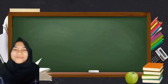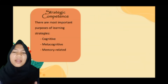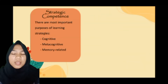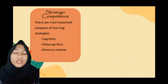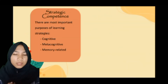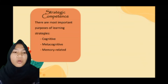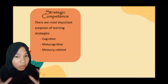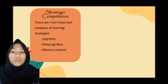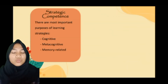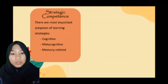Thank you, Alifah. Okay, guys, we have strategic competence. There are most important purposes of learning strategies. The first is cognitive — strategies making use of logic and analysis to help oneself learn a new language through outlining, summarizing, note-taking, organizing, and reviewing material. The second is metacognitive — strategies that involve planning one's learning by making time for homework or preparation and engaging in self-evaluation of one's success on a given task or overall progress. The third is memory-related — strategies that help learners recall or retrieve words through the use of acronyms, images, sounds, or other clues.